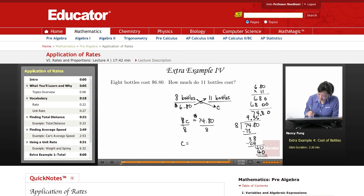So the cost is $9.35. Which makes sense because 8 bottles cost $6.80, and 11 is a few more than 8, and $9.35 is a few more dollars than $6.80. So that's in the right ballpark.